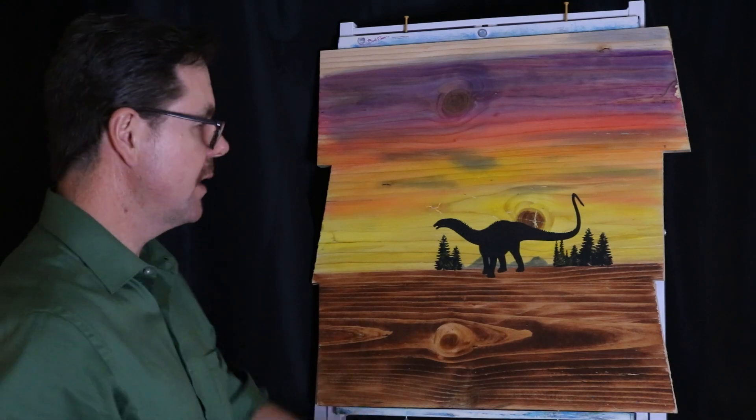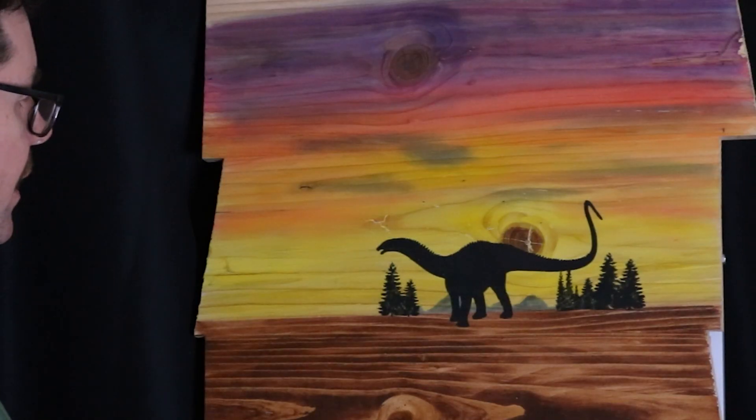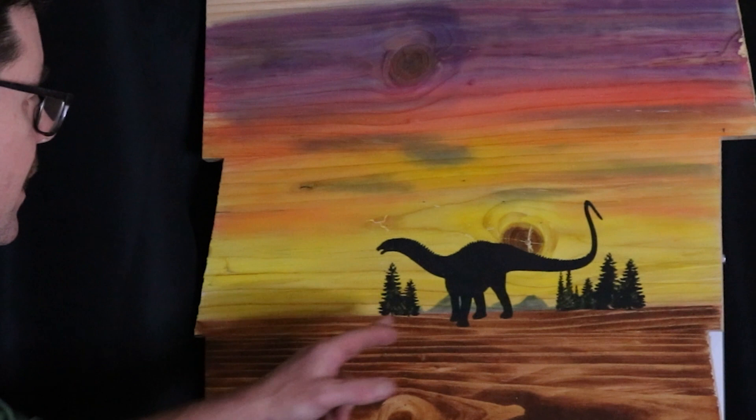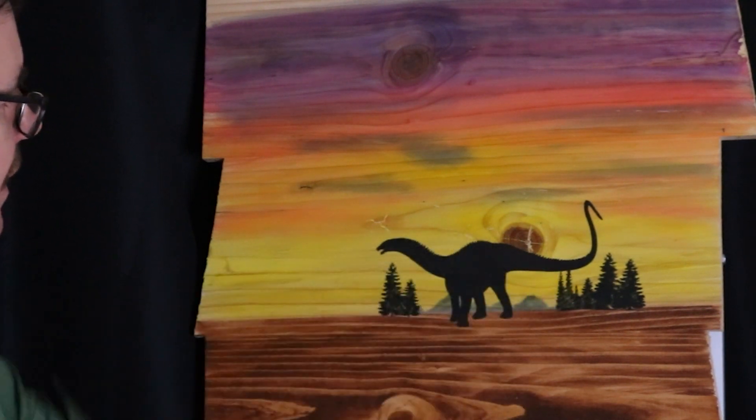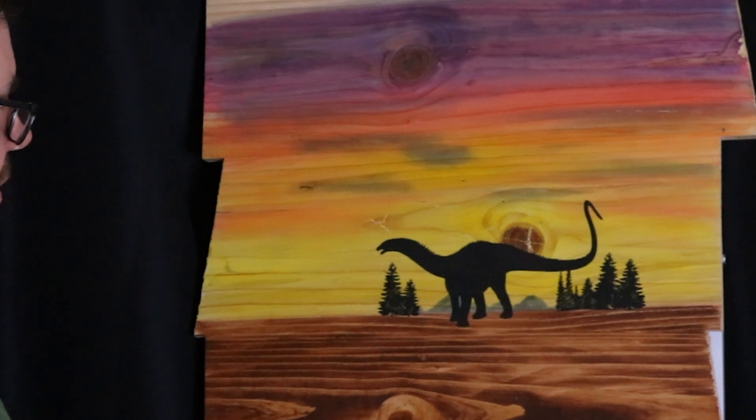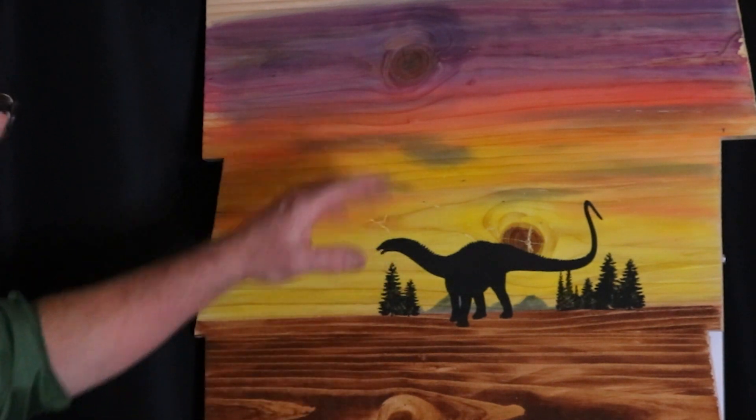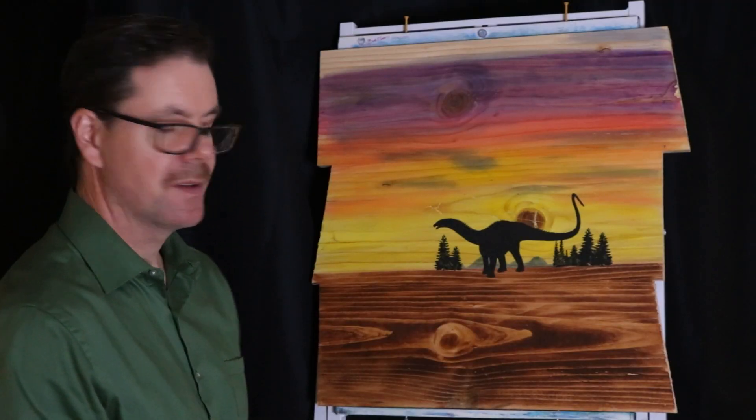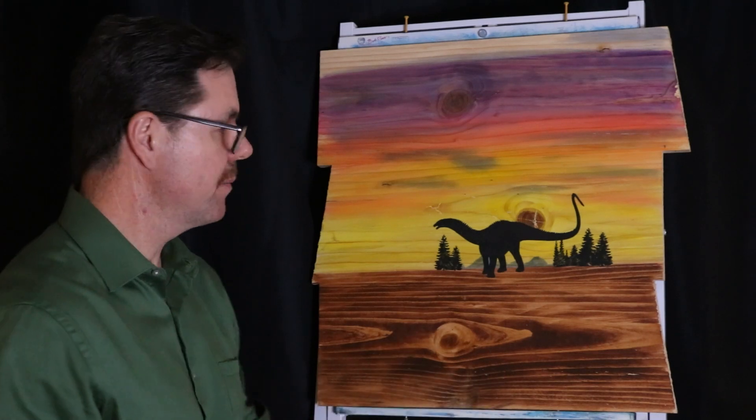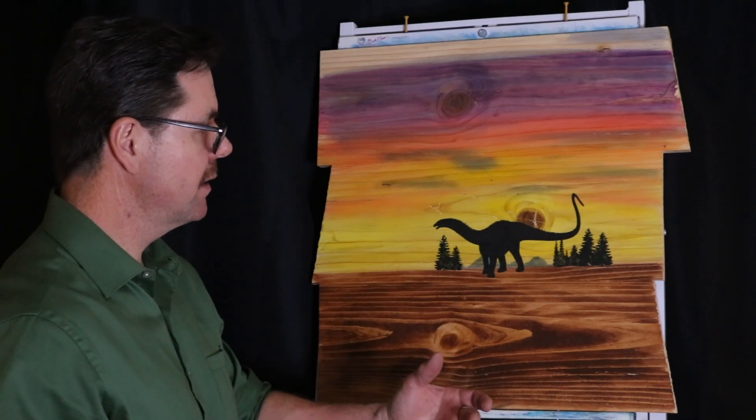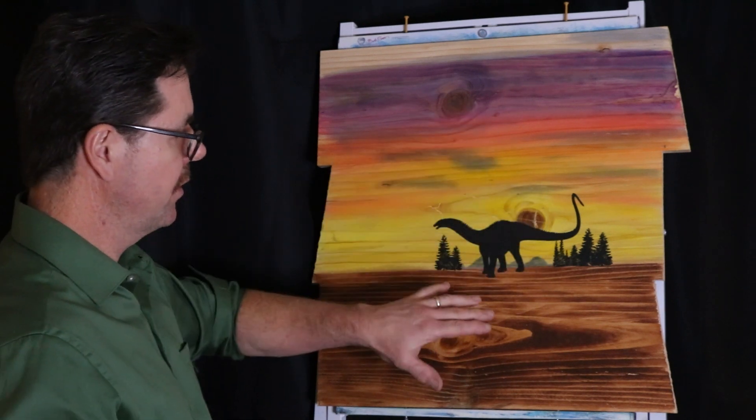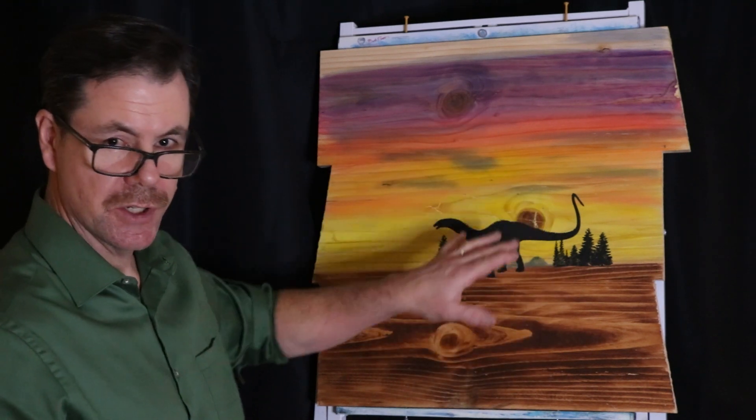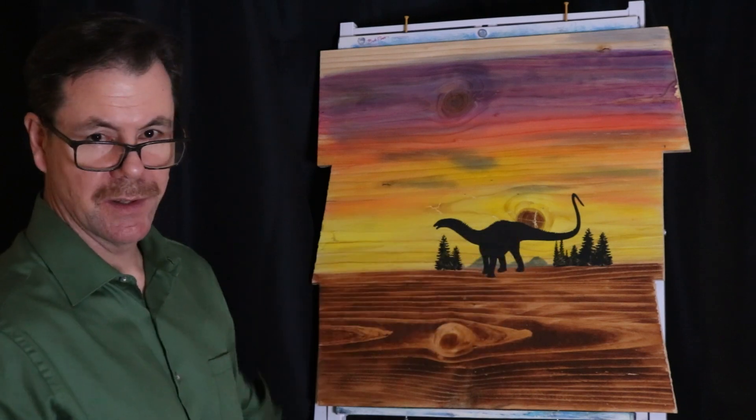So there we have it. I've taken off the stencil and came out pretty good. We got the mountains off in the distance and our happy little brontosaurus with his pine trees, a nice little sky there. So that's going to about wrap it up. I'll step away. And like I said, this was going to be a game board. I'll drill the holes, maybe add a few finishing touches, and we'll take a look at the end product.